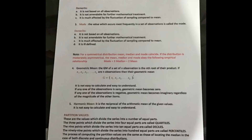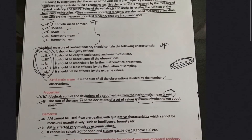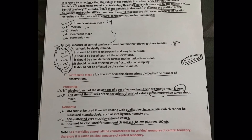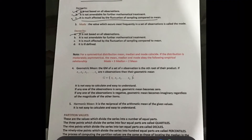Moving on to median. Median is the middle-most value of the variable when observations are arranged in ascending or descending order. Cumulative frequency is used in calculating median for discrete data. Demerits: it is not based on all observations, it is not amenable for further mathematical treatment, and it is much more affected by the fluctuation of sampling compared to the mean.